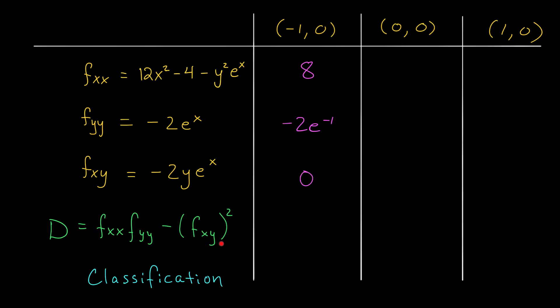Okay, time to compute the value of d. At the point minus 1, 0, my function is 8 times minus 2 e to the minus 1 minus 0 squared. That gives me minus 16 e to the minus 1. Ah, well, e to the minus 1 is positive. And I'm multiplying by minus 16. That means this quantity is negative. I have a negative value for d. That means my point is a saddle point.